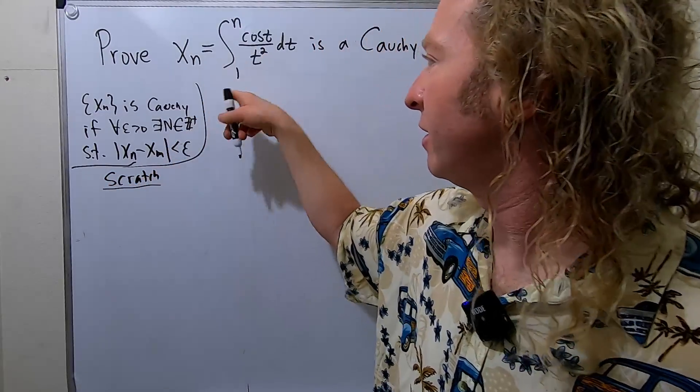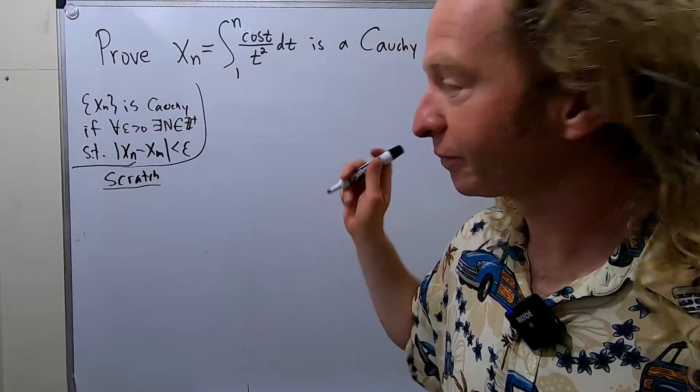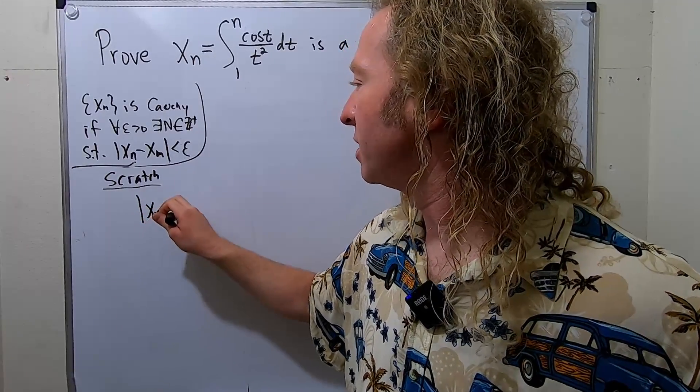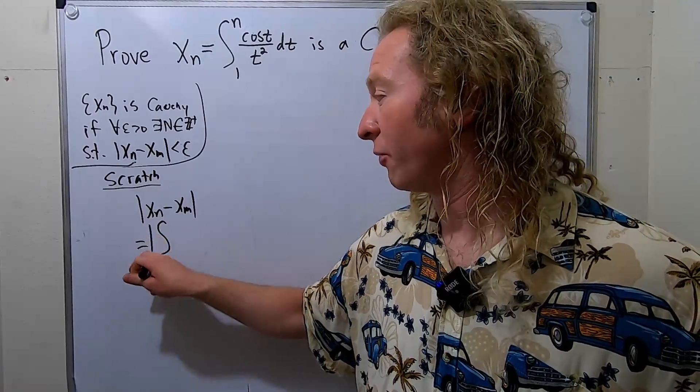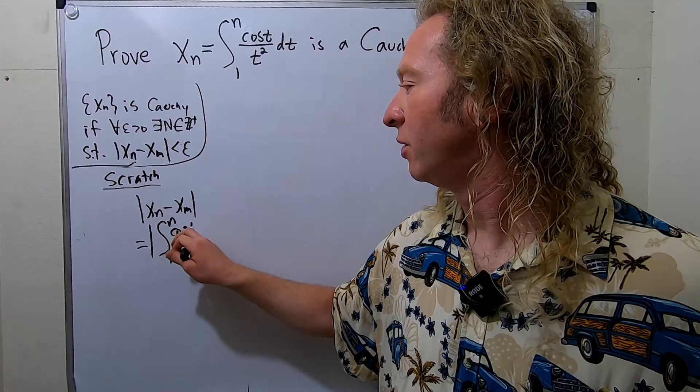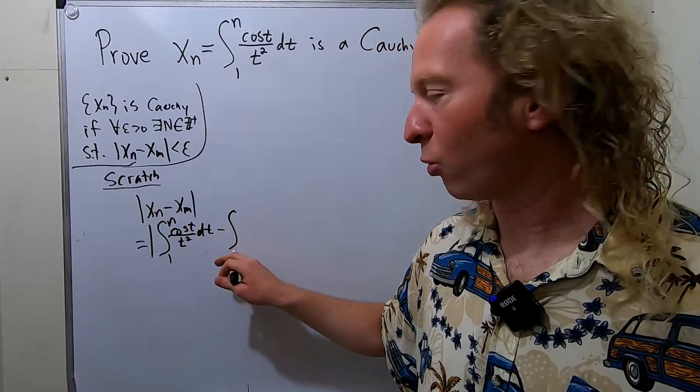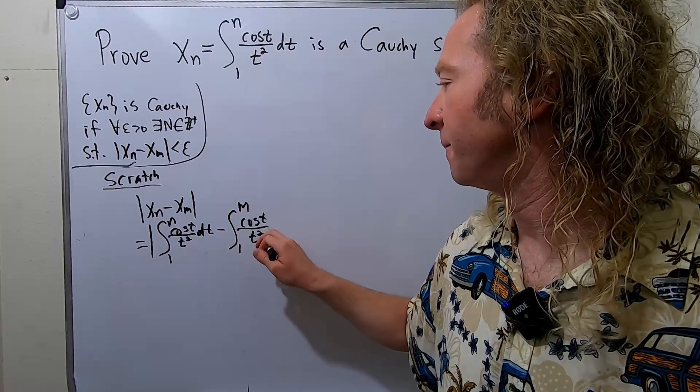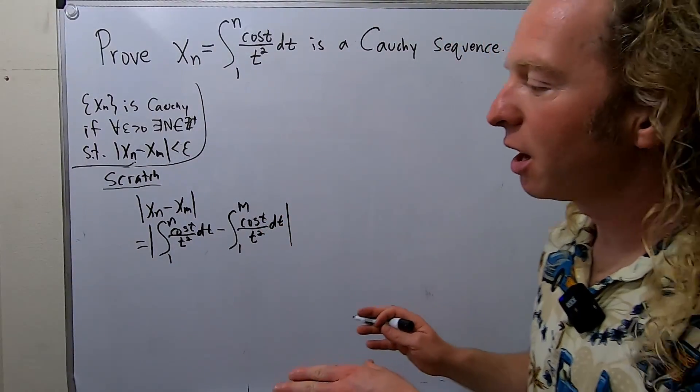So the goal is to find an n, such that when you look at this difference, it's less than epsilon. So let's see here. So we're looking at x_n minus x_m. That's the goal. And so this is equal to the magnitude, or the absolute value, from 1 to n of cos(t) over t^2 dt minus the integral from 1 to m of cos(t) over t^2 dt. Okay, we're looking at this, and we're trying to make this less than epsilon.